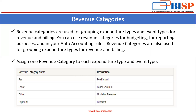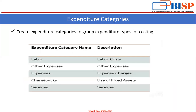Now we will see what is expenditure category. You have to create expenditure categories to group expenditure types for costing. Here are the examples of expenditure categories: labor, other expenses, expenses, chargeback, services, and you can find the description of each.